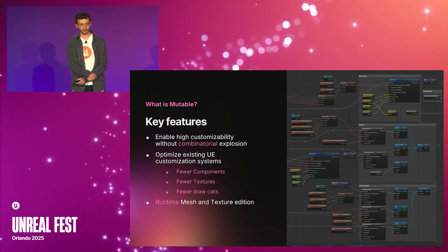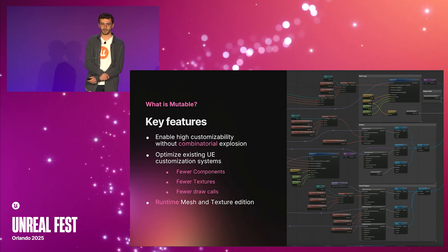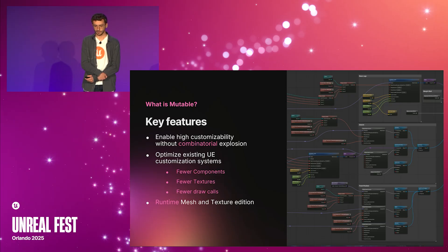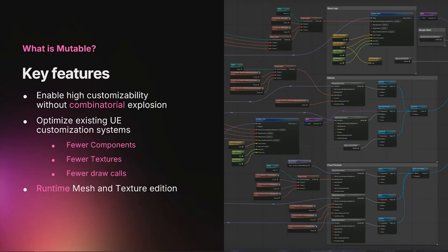Mutable can also be used for optimizing existing Unreal Engine customized systems. With it, you can merge components, draw calls, and textures, and not pay the price of splitting characters into multiple modular parts. Finally, Mutable can also be used as a runtime mesh and texture editing tool.